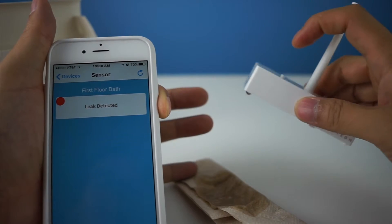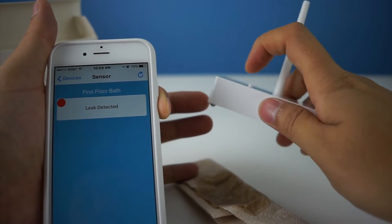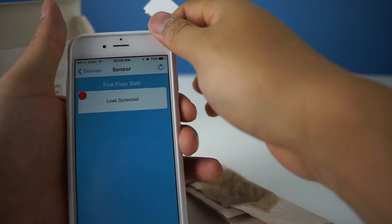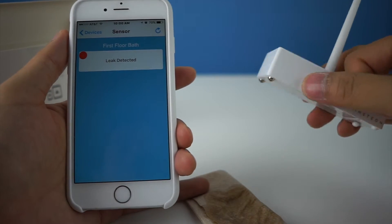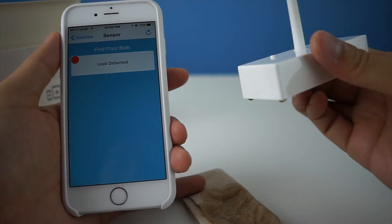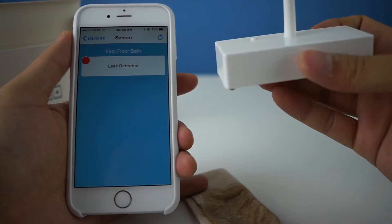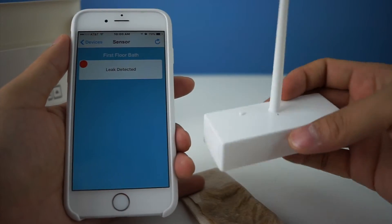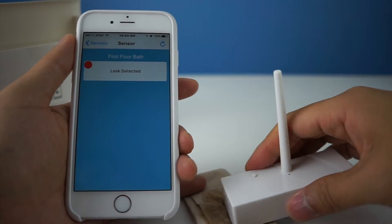See, leak detected. So the issue with the old ones - what happens is once you take it off the wet substance, it will automatically go back into dry.